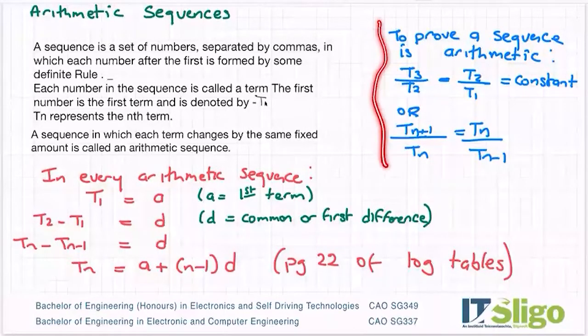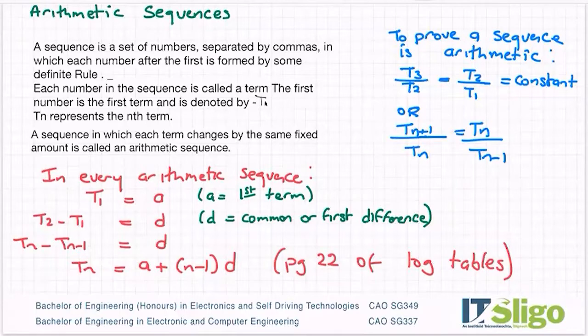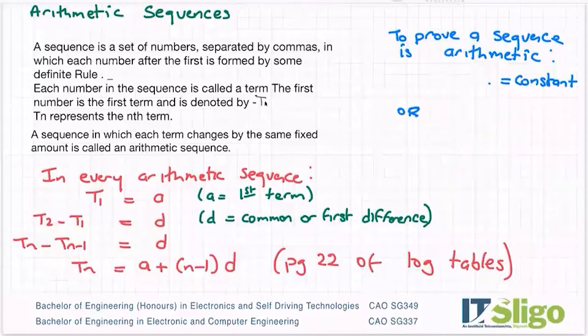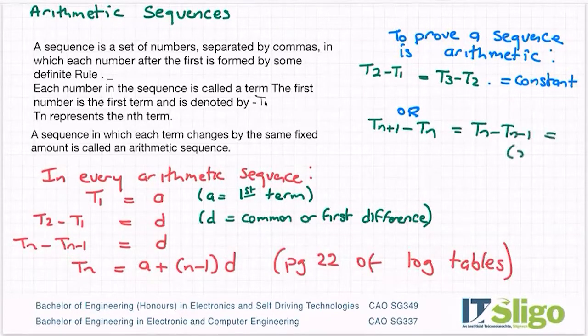And then up in blue here, I have a little piece. Sometimes you are asked to prove that a sequence is arithmetic. So what you're doing then is you're proving that the difference between them is the same. And I just noticed I wrote it down the wrong way, so I'm just going to fix what I wrote. So basically what you're saying is T2 minus T1 is equal to T3 minus T2. For example, it's a constant, so the difference between them is a constant. Or in general terms, you could have Tn plus one minus Tn equals Tn minus Tn minus one, which is a constant.